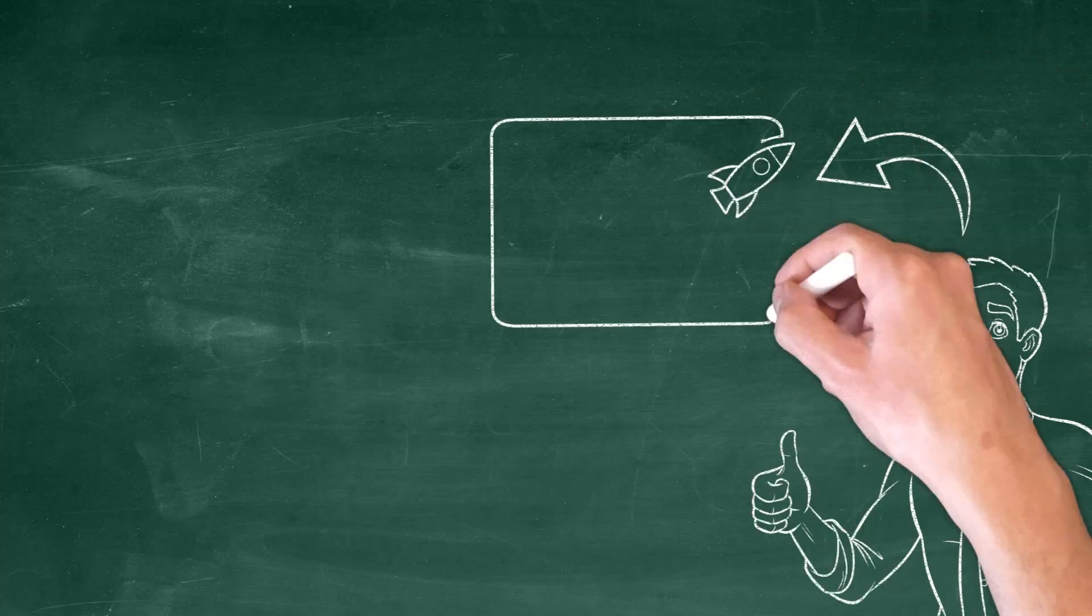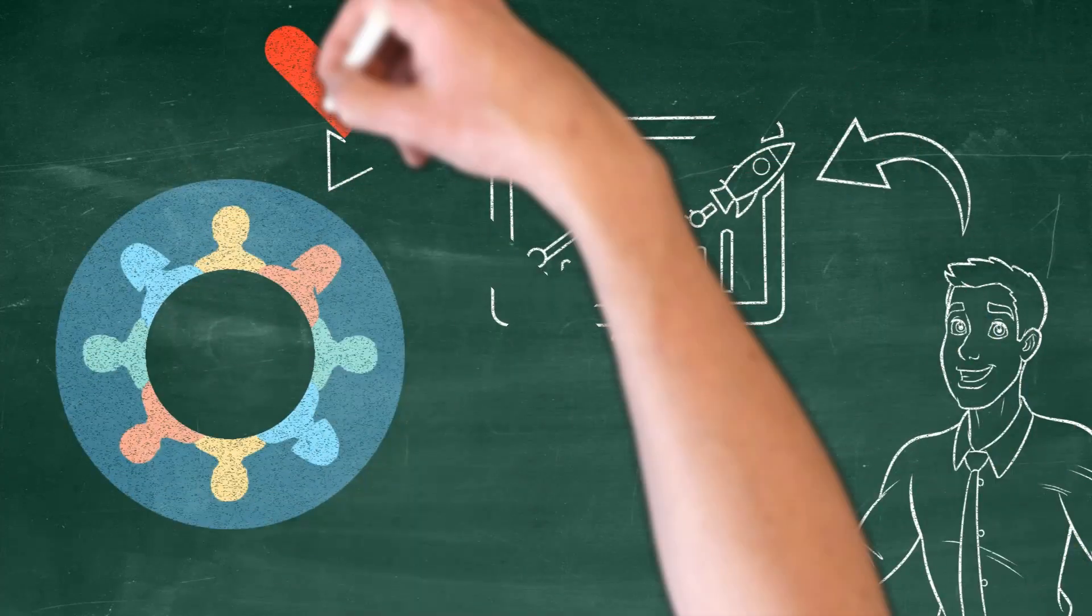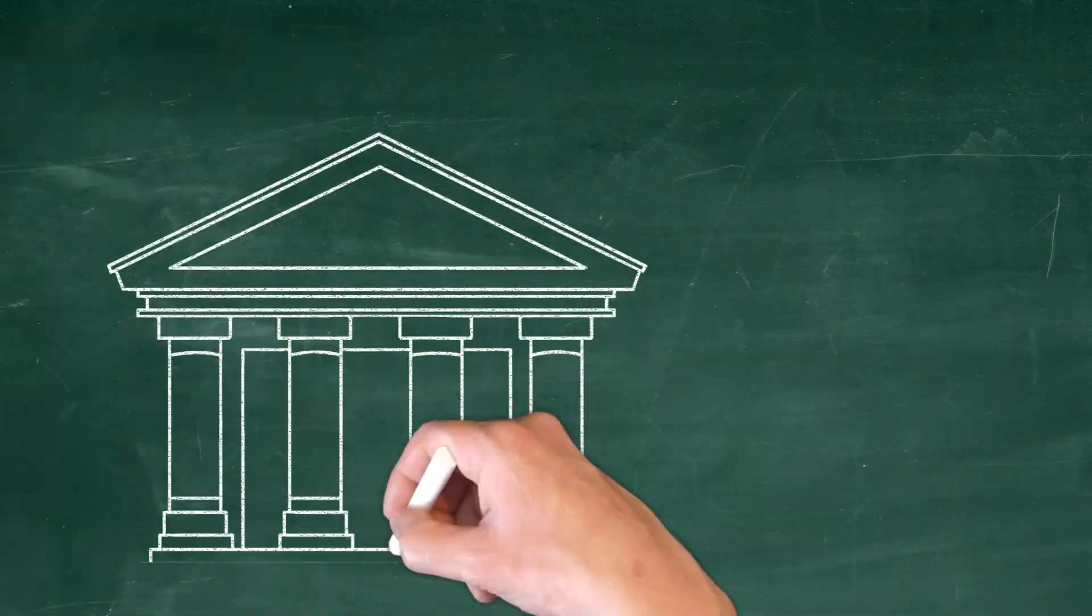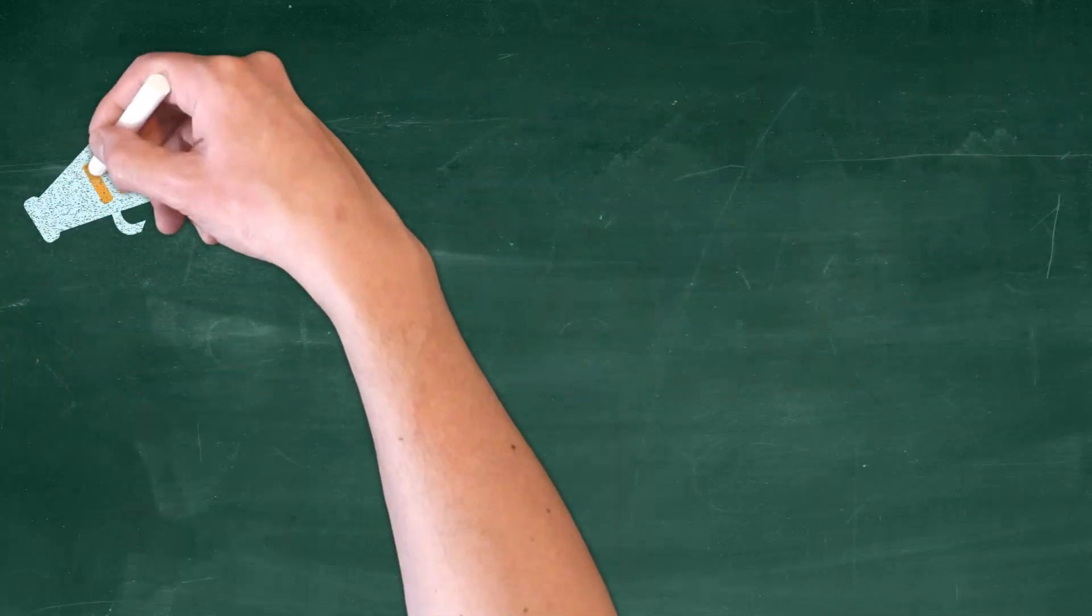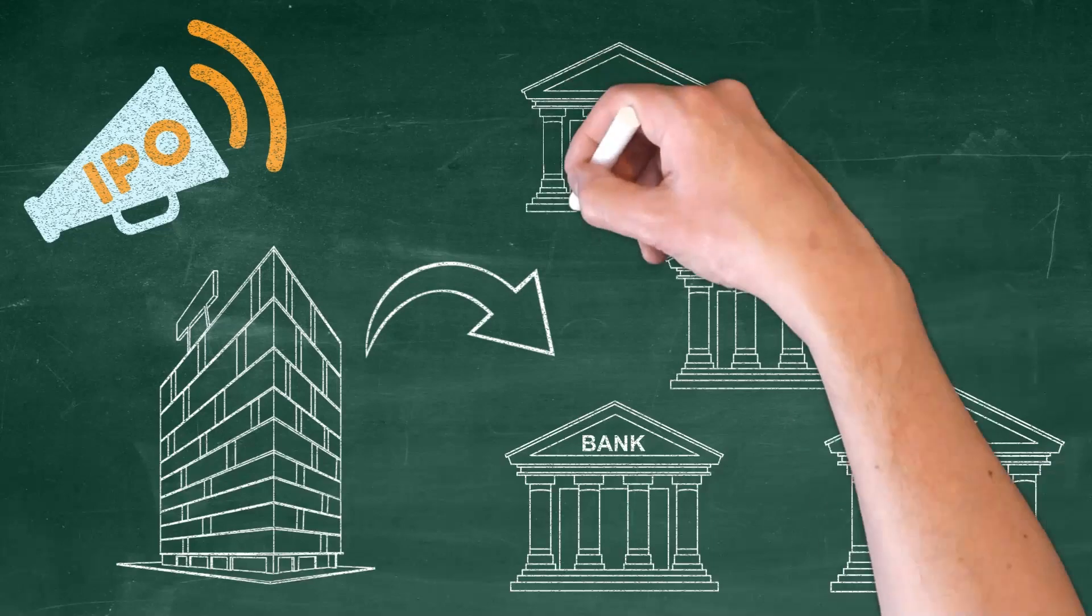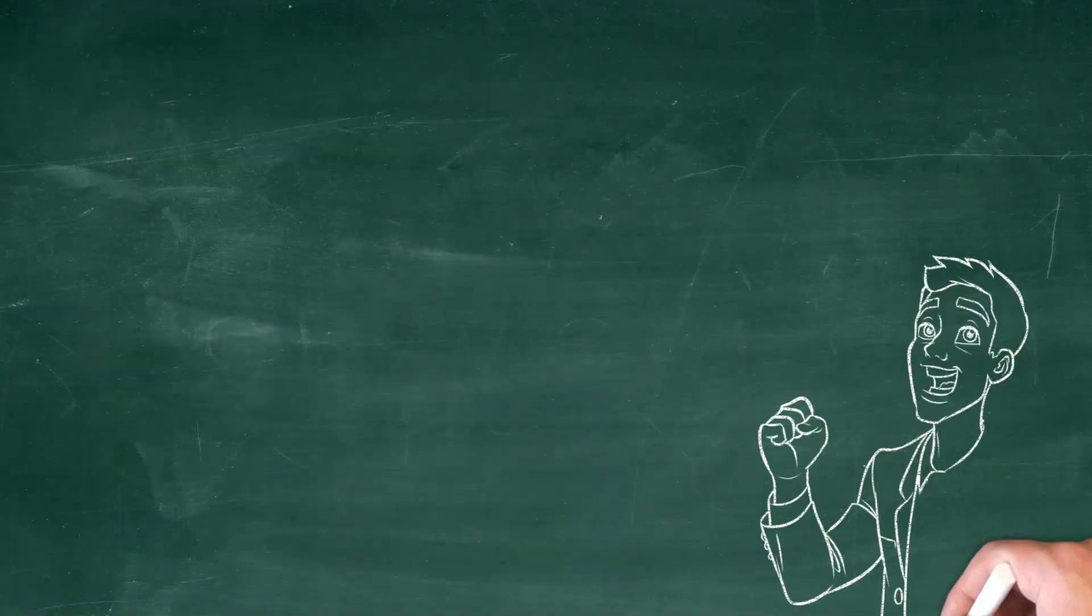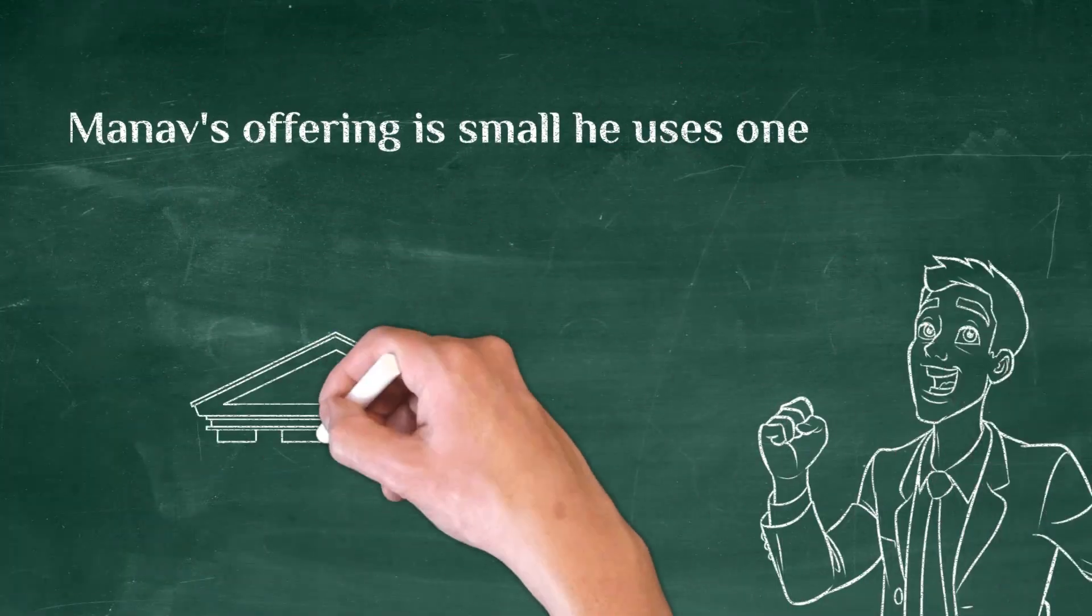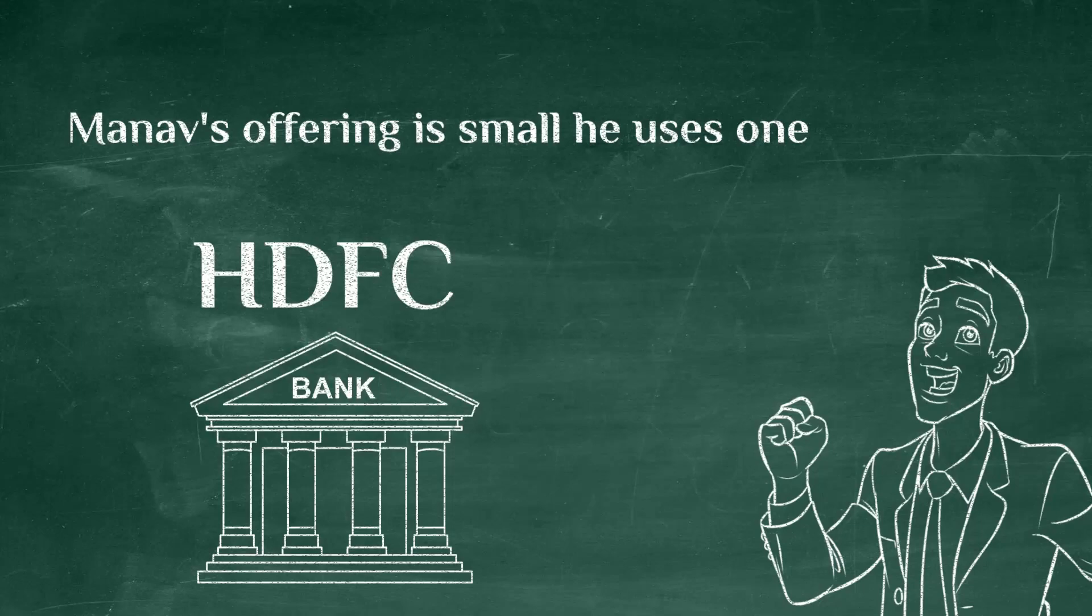Manav cannot just issue the stocks to the public himself. He needs to use an investment bank. If the IPO is big enough, a company can use multiple investment banks, but since Manav's offering is small, he uses one: HDFC.